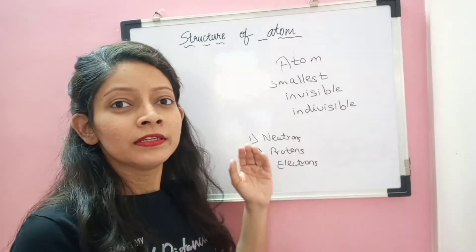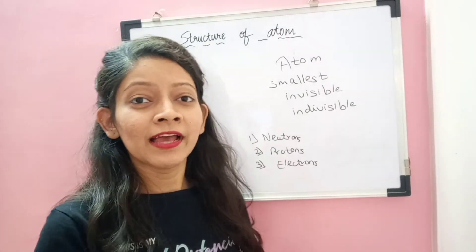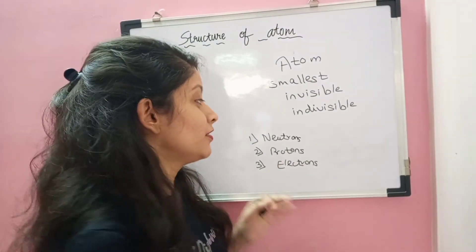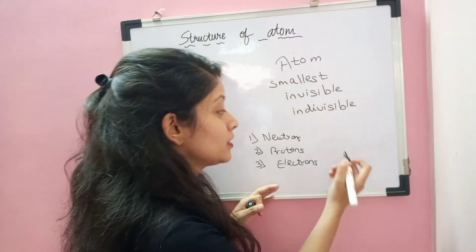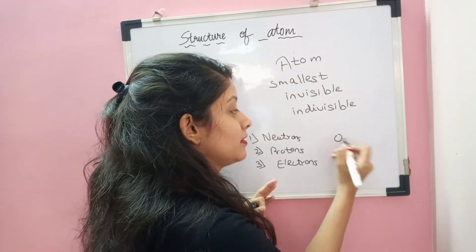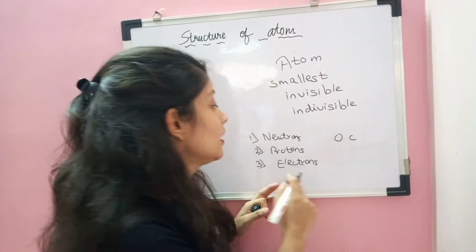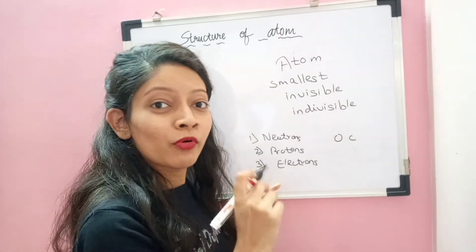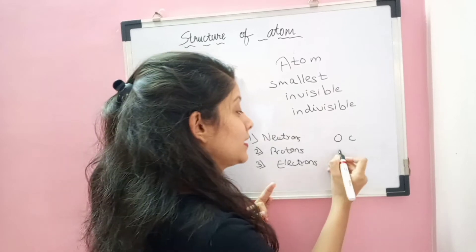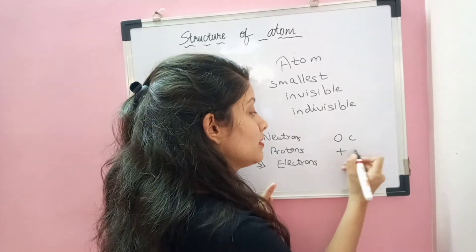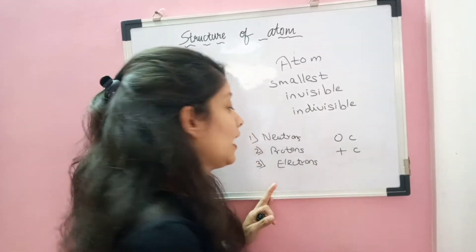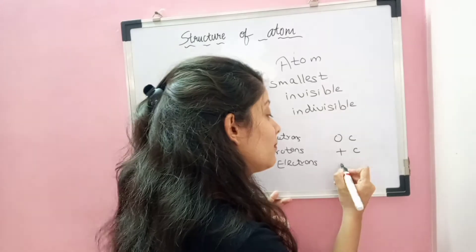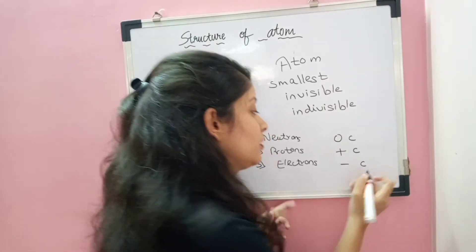Each subatomic particle has a specific charge. Neutrons have neutral charge, that is zero charge. Protons have positive charge, that is plus charge. And electrons have negative charge, that is minus charge.